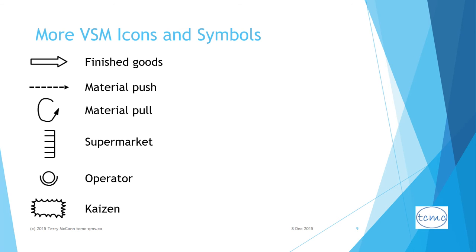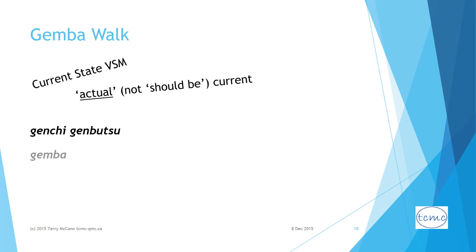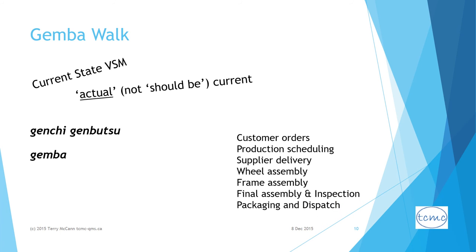Now we have our map symbols — where do you start? Start with a current state VSM. To make sure it reflects actual current state rather than what 'should be,' go and observe. The Japanese lean term for this at Toyota is Genchi Genbutsu, or simply Gemba. Don't draw the map in the boardroom before walking through the process, respectfully meeting with employees, and noting what is actually being done. Then, once the map is drawn, walk the production floor once more to verify its accuracy. Shoulds and oughts have no place in the current state VSM.